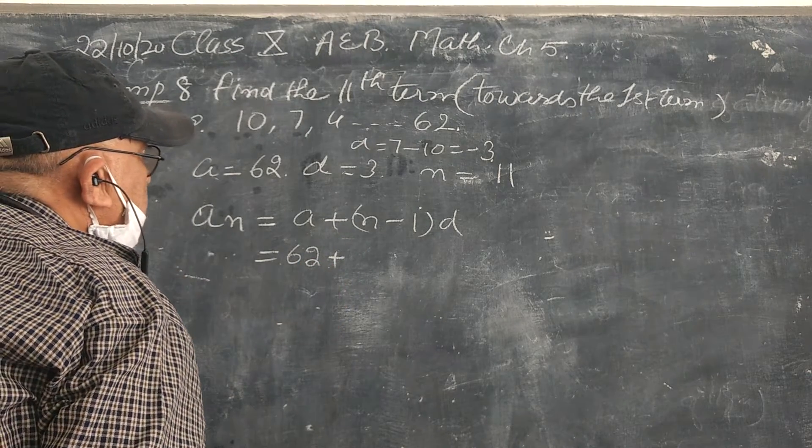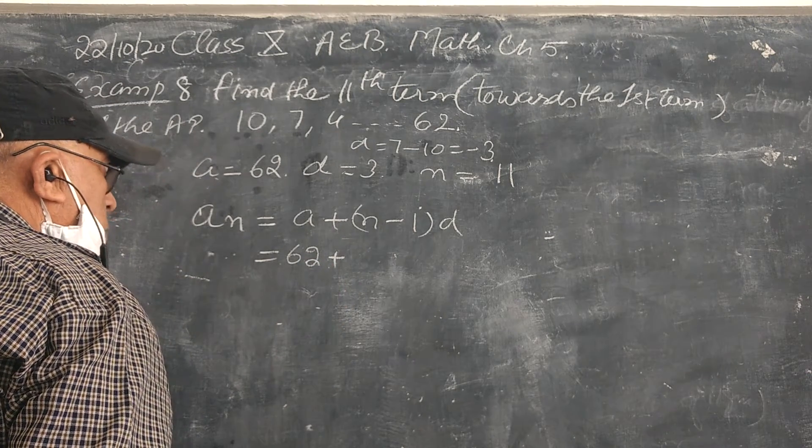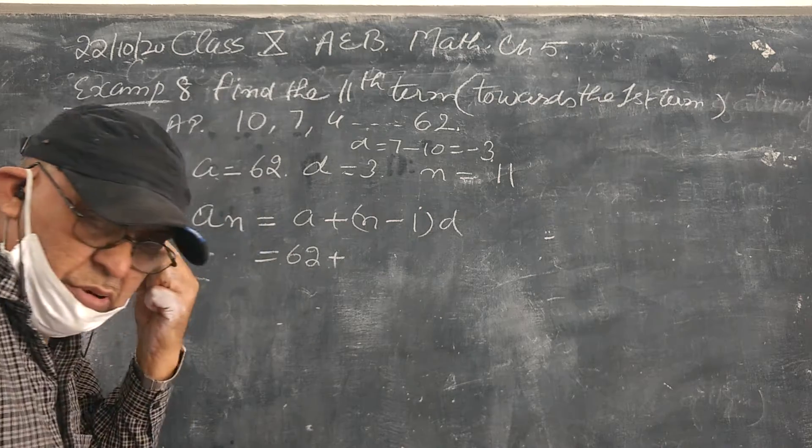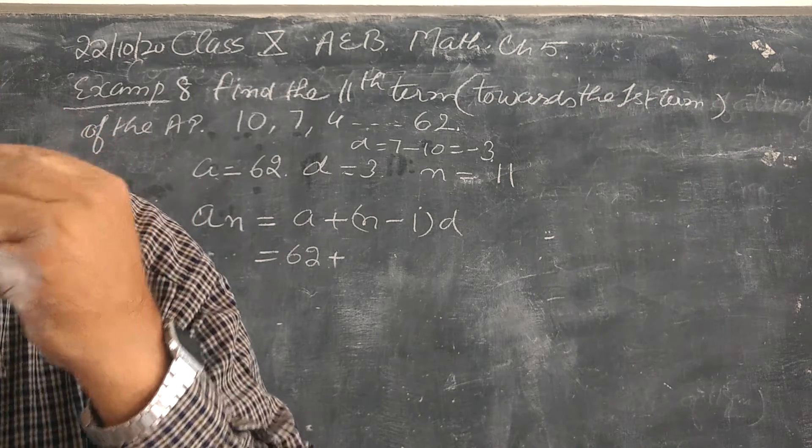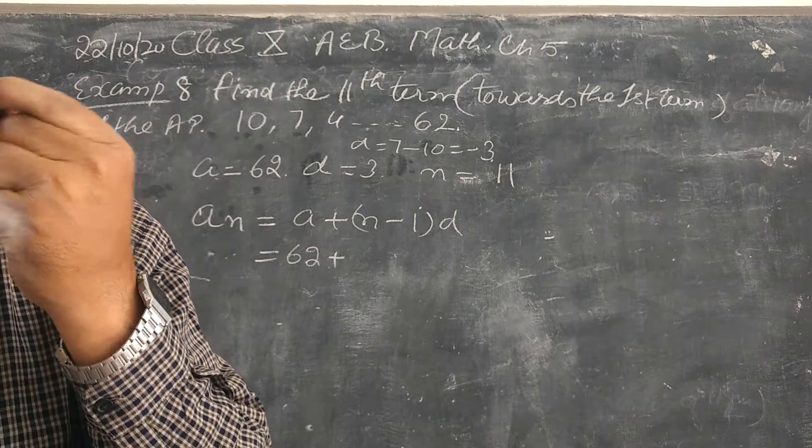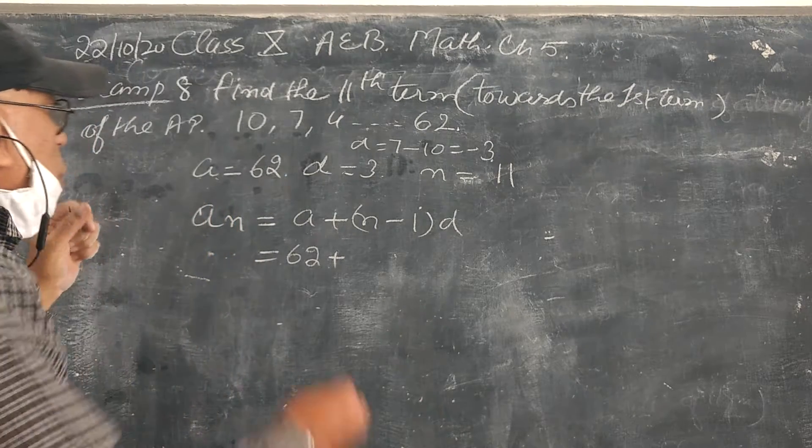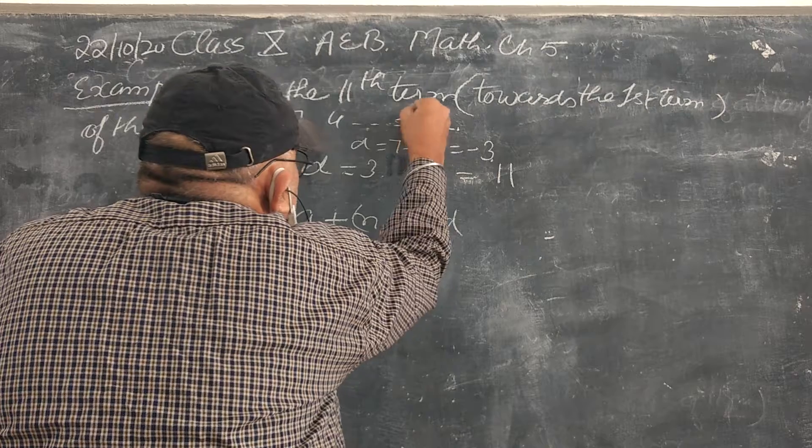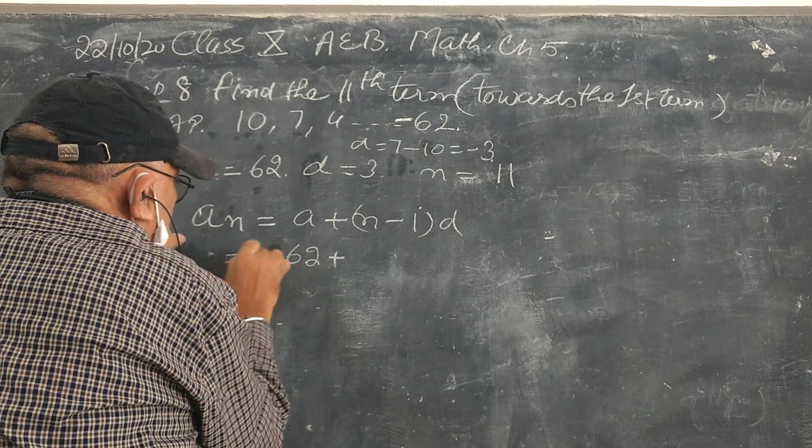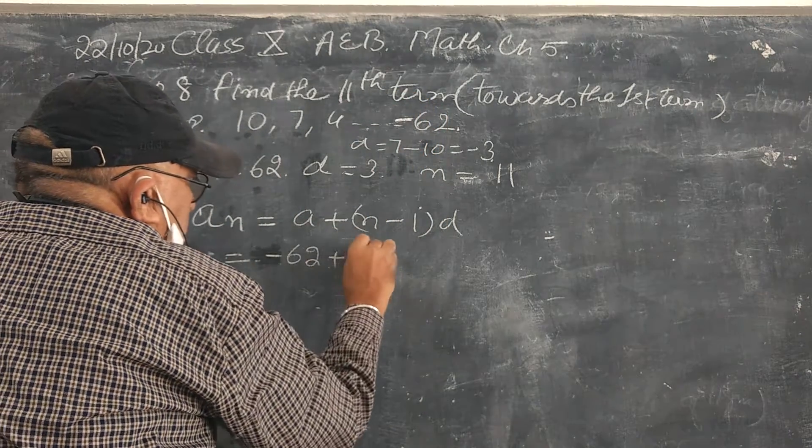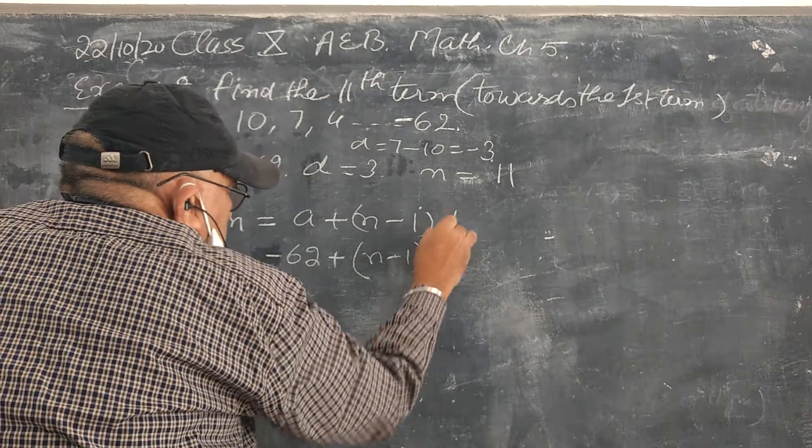Plus, this minus 62 over, minus 62 over here. In the half round we are getting minus 62 plus n minus 1 equal to 3.